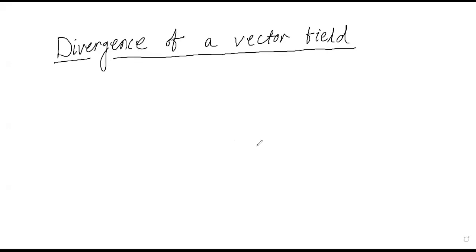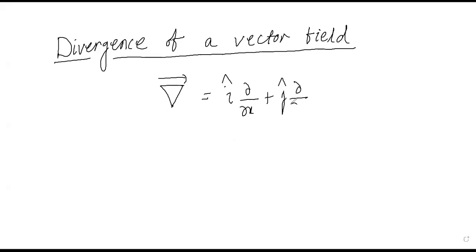In the previous video we discussed the del operator, given by i-cap del/del_x plus j-cap del/del_y plus k-cap del/del_z. We discussed the operation of del on a scalar quantity, which gives us grad phi — the gradient of a scalar — and its physical significance.